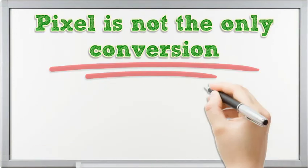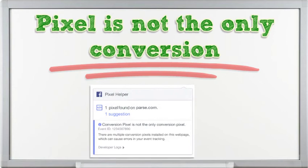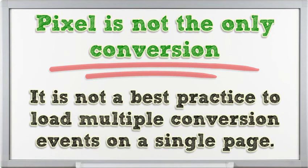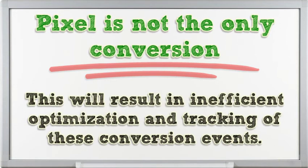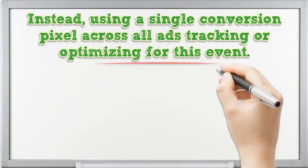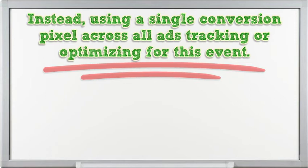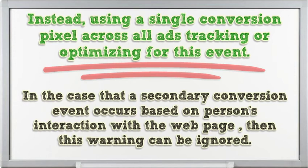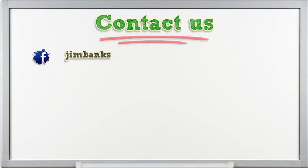Pixel is not the only conversion: it is not a best practice to load multiple conversion events on a single page. This will result in inefficient optimization and tracking of these conversion events. Instead, use a single conversion pixel across all ads tracking or optimizing for this event. In the case that a secondary conversion event occurs based on a person's interaction with the web page, then this warning can be ignored.